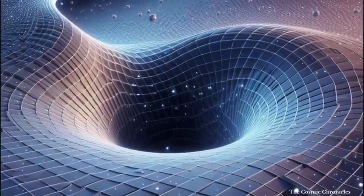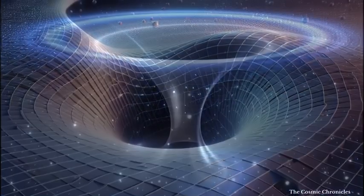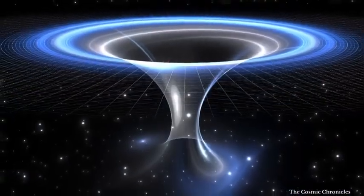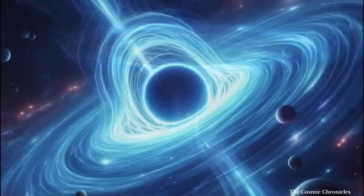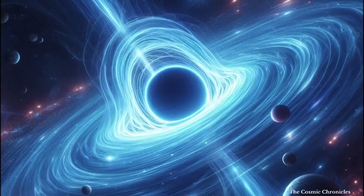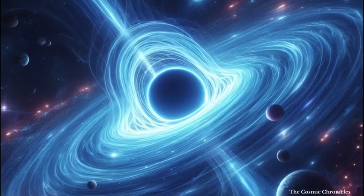There are two types of wormholes, traversable and non-traversable, with traversable ones potentially allowing safe passage. For stability, exotic matter with negative energy may be required, though unproven.